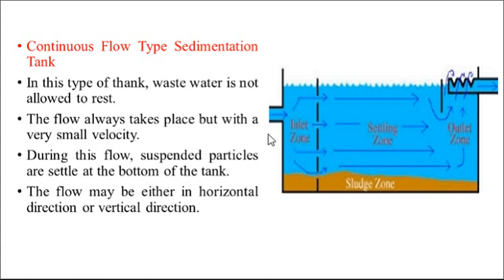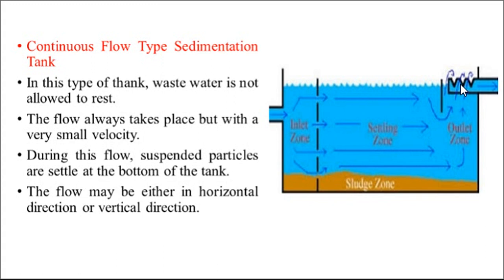This is a cross section. Through this pipe, the wastewater first enters into the inlet zone, and then through this opening, the wastewater is applied to the settling zone. In this zone, settlement of particles takes place due to the lesser velocity. Then there is the outlet zone, through which the remaining particles and clear wastewater flow through the outlet pipe.